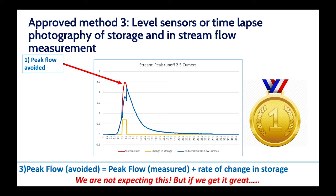This is the gold standard approach for measuring storage. It allows us, using level sensors or time-lapse photography, to measure the rate of change of storage and then compare it with stream flow measurements. I know of a couple of examples where this has been done; one is from Josh at Trent Rivers Trust — I spoke to him after the webinar and he's happy for people to contact him, so I will put his details on this slide. This is very much the gold standard; we're not expecting this from any projects, but it's a great piece of work if you can do it — quite intensive and takes considerable effort.